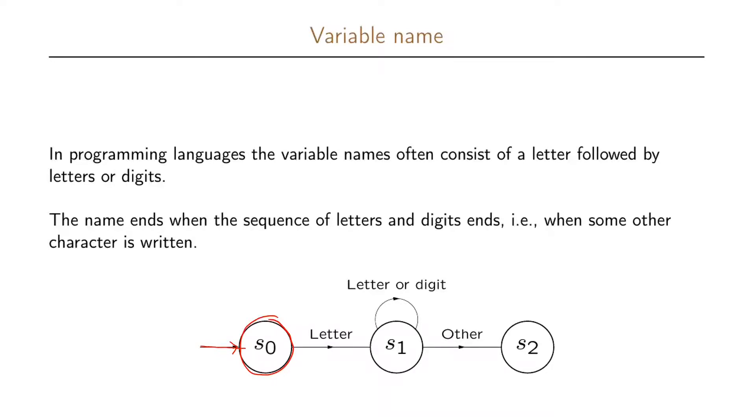In the starting state, when we find a letter, we move on to the next state. In this state, we are waiting for a letter or a digit. As long as we are getting letters or digits, we stay in this state. When we get another character, we go to the end state, which means we have finished parsing the variable.